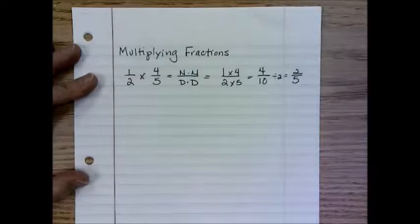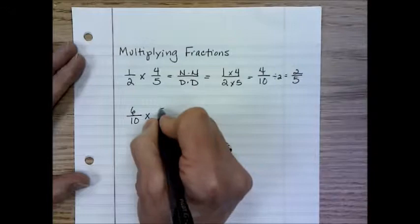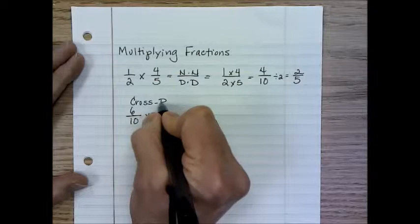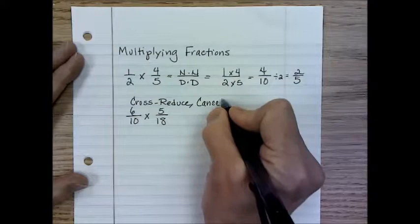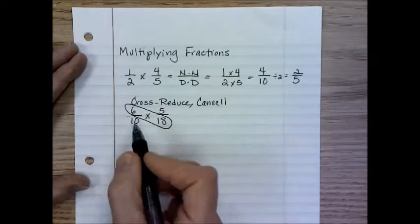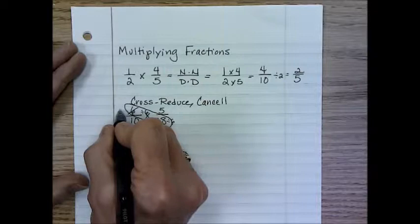Now, if we have six over ten times five over eighteen, these numbers are starting to get a little big. So we can do what we call cross-reducing or canceling to make our numbers smaller from the beginning. And what we're going to do is take the numerator, match it with the opposite denominator, and ask, do six and eighteen have a common factor? They do. They are both divisible by six. So if we do six divided by six, this now becomes one. Eighteen divided by six now becomes three.